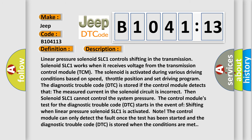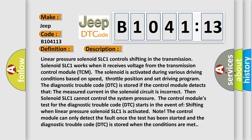And now this is a short description of this DTC code. Linear pressure solenoid SLC1 controls shifting in the transmission. Solenoid SLC1 works when it receives voltage from the transmission control module TCM.